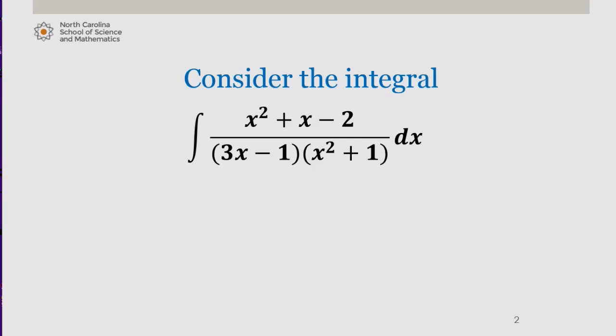Let's focus on the integrand x squared plus x minus 2 over 3x minus 1 times x squared plus 1. As we've seen with previous examples, we can rewrite the integrand as a sum of rational functions.